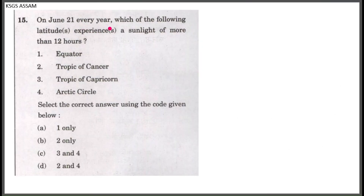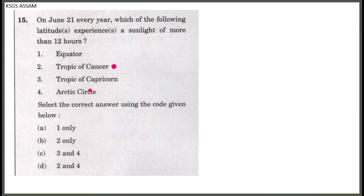On June 21 every year, which of the following latitudes experience sunlight of more than 12 hours? June 21 is when the northern hemisphere has its summer solstice. The Tropic of Cancer and the Arctic Circle both experience more than 12 hours of sunlight. So options 2 and 4 are correct.